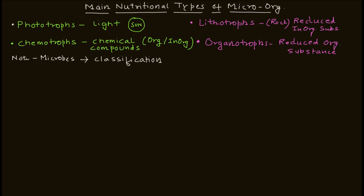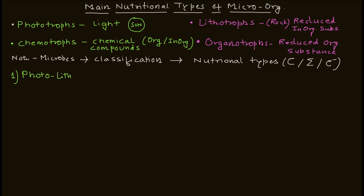Before we move on to further subtypes, I want to mention that these organisms can be further classified based on their carbon, energy, and electron requirements. If you have seen my previous video on microbial nutrition, I discussed the importance of carbon, hydrogen, oxygen, electrons, and energy. Based on these specific resources, they are further classified.